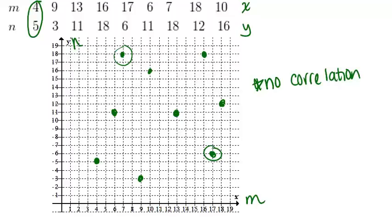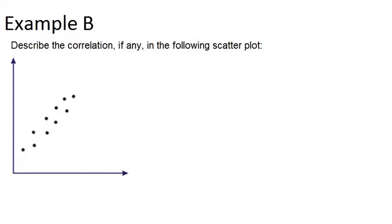Now let's look at example B. Describe the correlation, if any, in the following scatter plot. Now, compared to example A, there's definitely a relationship here or a correlation between the two variables. I almost can just draw in this line right here to show the trend of what's happening.